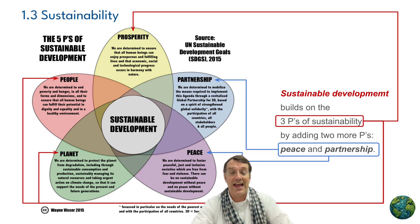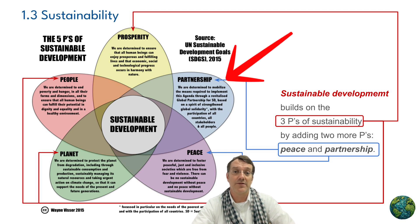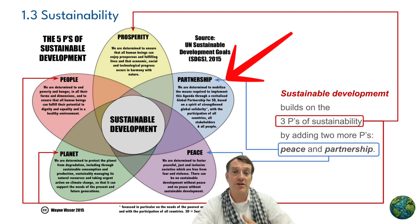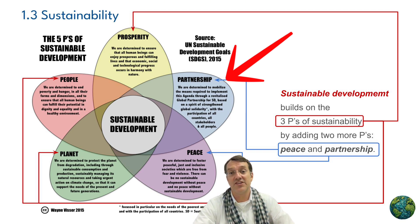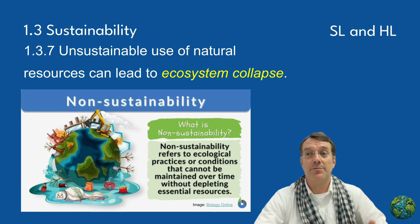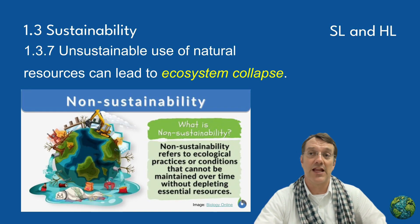In order to achieve those three pillars of sustainability, we need partnerships. Some of those partnerships are local, some are government partnerships at a state or national level, but a lot of them are international because many of these issues are international in scope. Unsustainable resource use can lead to ecosystem collapse.